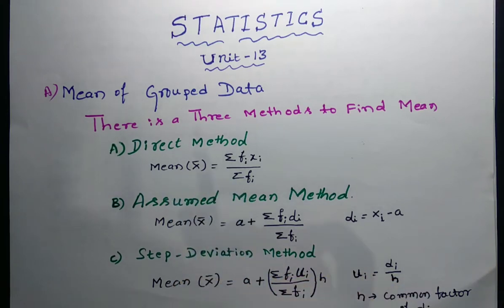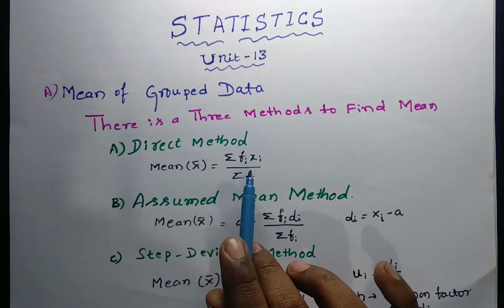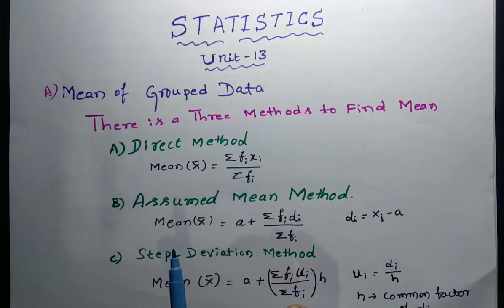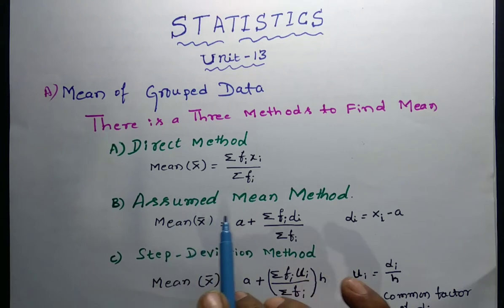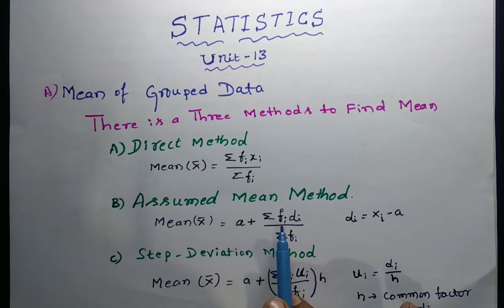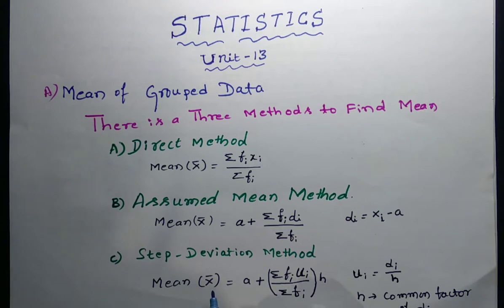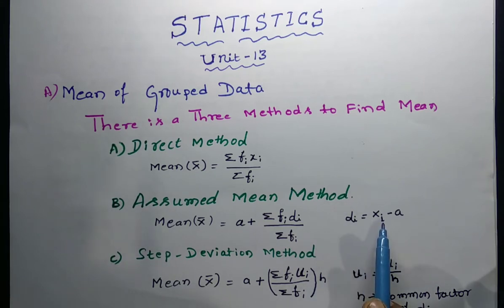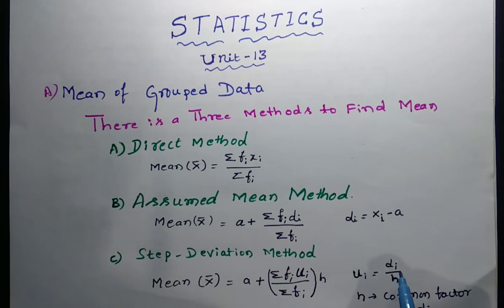The first one is the direct method. Its formula is: Mean x̄ = Σfᵢxᵢ / Σfᵢ. For the assumed mean method: x̄ = a + Σfᵢdᵢ / Σfᵢ. For the step deviation method: x̄ = a + (Σfᵢuᵢ / Σfᵢ) × h, where dᵢ = xᵢ − a, a is the assumed mean, uᵢ = dᵢ / h, and h is the common factor in dᵢ.